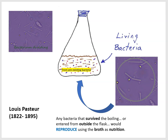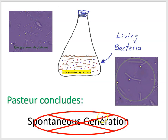Pasteur is going to do a clever set of experiments featured in the next lesson. But his ultimate conclusion is that spontaneous generation does not happen. And he was very persuasive in putting the final nail in the coffin of this idea of spontaneous generation.